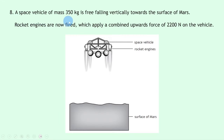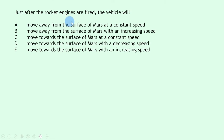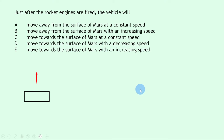Question 8 says a space vehicle of mass 350 kilograms is free-falling vertically towards the surface of Mars. Rocket engines fire, applying a combined upwards force of 2200 newtons. To determine what happens, we need to find the unbalanced force — its direction tells us whether the object speeds up, slows down, or moves at constant speed.